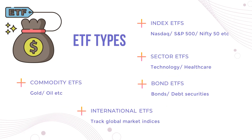There are various types of ETFs available. First is the index ETF, which tracks a specific index like the S&P 500 or the Nifty 50 in India. Then you have sector ETFs, which track a particular sector. For example, you may invest in a technology ETF to get exposure to the technology sector.